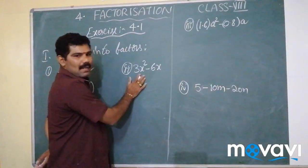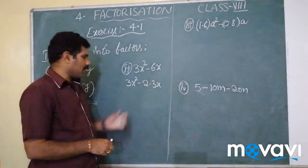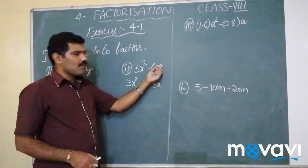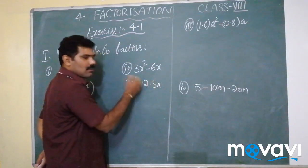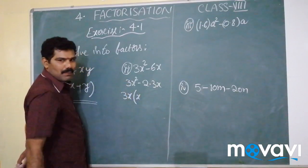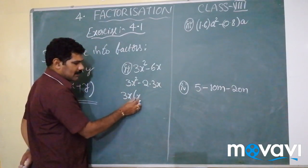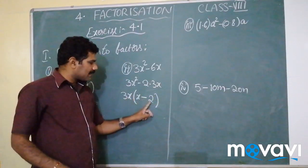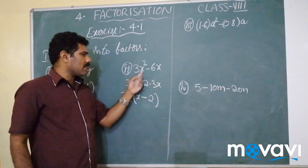Coming to the second problem, 3x² - 6x can be written as 3·x² minus 2·3·x. Here x is common for both terms and 3 is also common in both terms. So I can write 3x outside. If 3x is taken outside, only x remains in the first term: 3x·x = 3x², and 3x·(-2) = -6x. Therefore 3x and (x - 2) are the factors of 3x² - 6x.